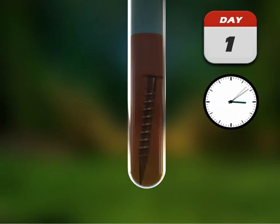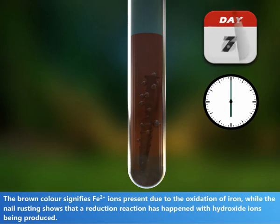This solution turns brown in the presence of Fe2+ ions as this experiment demonstrates. The brown color signifies Fe2+ ions present due to the oxidation of iron.